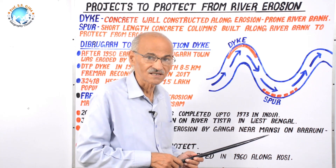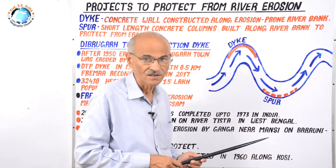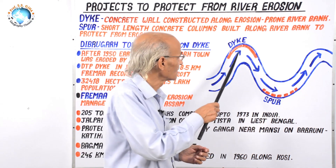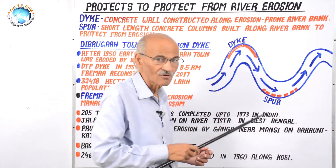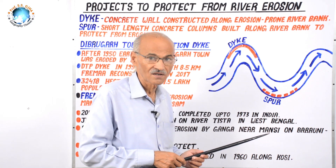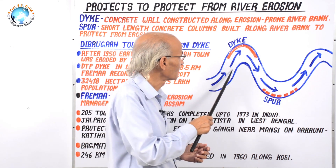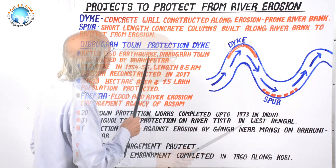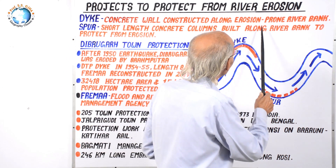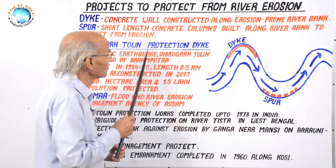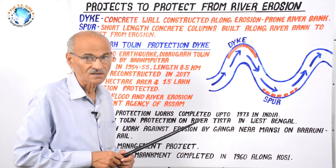Dike along the river bank where bluffs are present or rivers are doing lateral erosion — in human geography, a dike is a long wall made up of concrete, brick, iron, and cement. Its aim is to protect land from the lateral erosion of streams. Thus, a dike is a concrete wall constructed along an erosion-prone river bank.